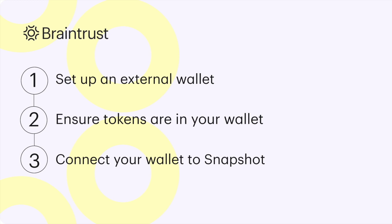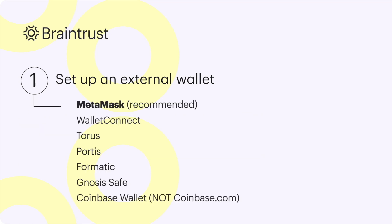You'll find some helpful links in the description below. For the purposes of this walkthrough, we're going to assume you have already set up an external wallet. But if you haven't, here's a list of compatible wallets that work with Snapshot, our voting tool. We recommend MetaMask, and you'll notice that I'm using a Chrome extension through this walkthrough.